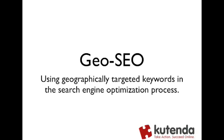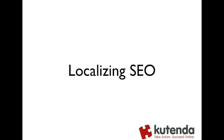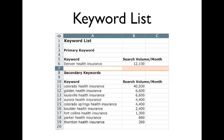Today is really about taking the words that we have. In the last video, we talked about localizing our SEO to get traffic more quickly and traffic from the right places, and then taking that information and turning it into a keyword list. The example we're going to be using today is in the health insurance market in Denver.